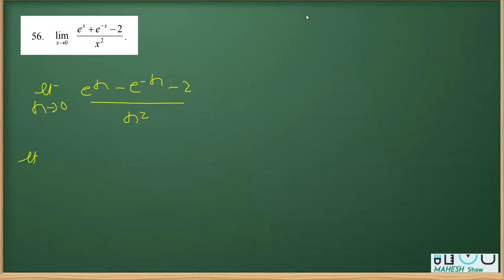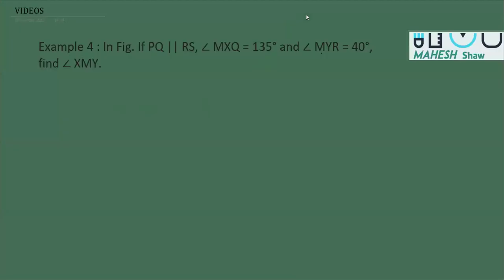What I'm going to do here is take e raised to the power minus x as common — that is, divide through by e raised to the power minus x. Applying laws of exponents, you will get e raised to the power 2x in the first term. Let me show you the working so you can understand it properly.